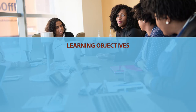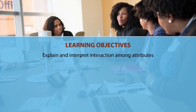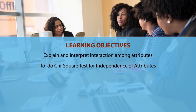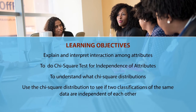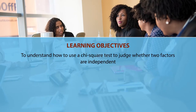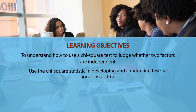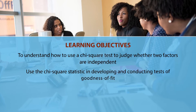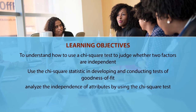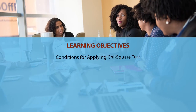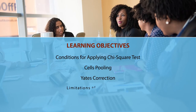Let us narrow down to our learning objectives. We are going to explain and interpret interaction among attributes, do the Chi-square test for independence of attributes, understand what Chi-square distributions are, use the Chi-square distribution to see if two classifications of the same data are independent of each other, use the Chi-square statistic in goodness of fit tests, analyze independence of attributes using the Chi-square test, understand conditions for applying the Chi-square test including cell pooling, Yates correction, and limitations of the Chi-square test.